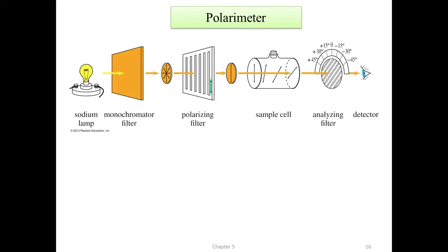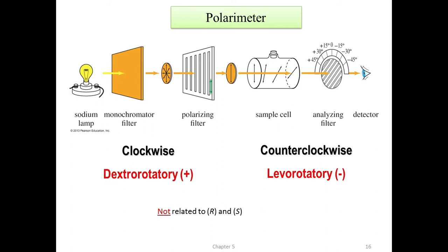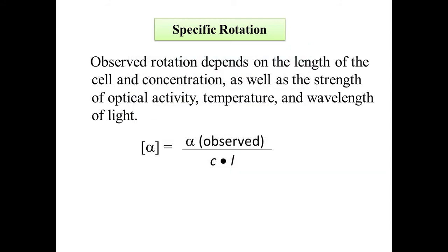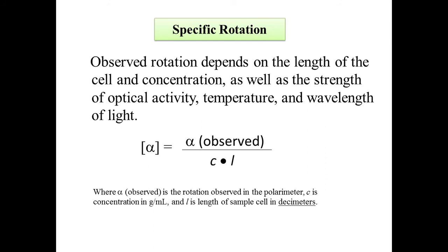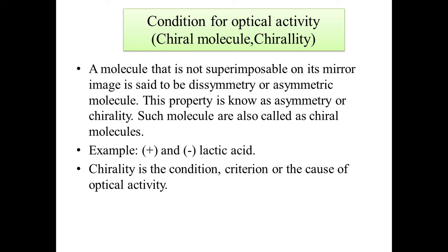In polarimetry, ordinary light is converted into plane-polarized light. The sample cell is analyzed for clockwise (+) or anticlockwise (−) rotation. Specific rotation depends on the length of the cell, concentration, optical activity strength, temperature, and wavelength of light. The formula is: [α] = α_observed / (c × l), where α_observed is the rotation in degrees, c is concentration in g/mL, and l is the path length of the sample cell.